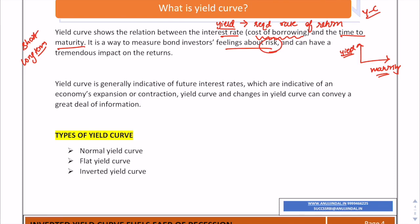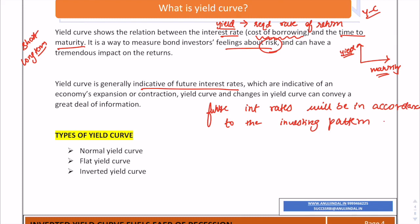Yield curve is generally indicative of future interest rates, because future interest rates will be in accordance with the investing pattern of investors now. If an investor perceives risk in the future, he will increase his required rate of return and invest accordingly, so that his perception about risk will come true and future interest rates would react accordingly. Yield curve is a very good indicator of an economy's expansion — that is, growth — or contraction — that is, recession.